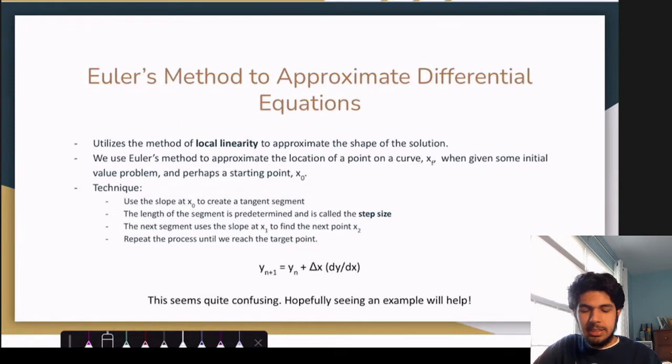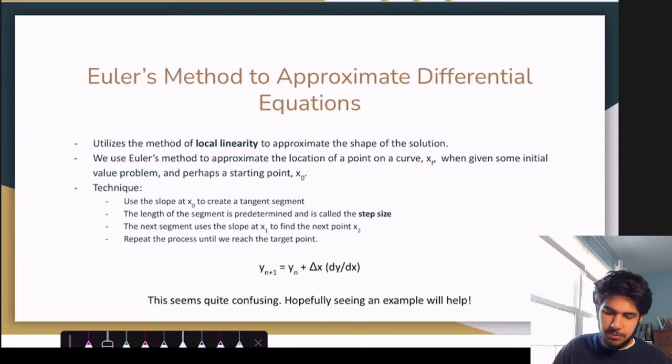So the idea is that we'll use Euler's method to approximate the location of a point on some curve. So we'll call this point x sub f. And we do this when we're given an initial value problem, and perhaps some sort of starting point x naught. So we're going to jump our way from x naught to x f and use previous values.